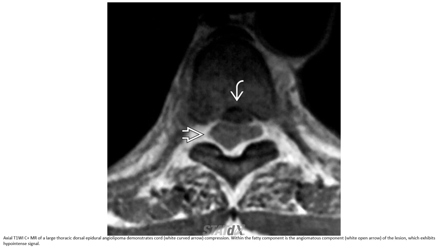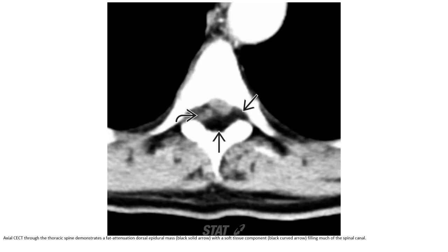The fatty component is the angiomatous component of the lesion, which exhibits hyperintense signal. CT through the thoracic spine demonstrates fat attenuation dorsal epidural mass with a soft tissue component filling much of the spinal canal.